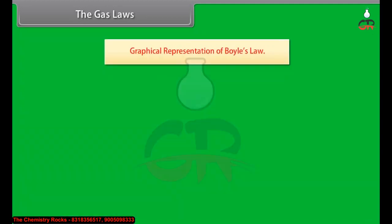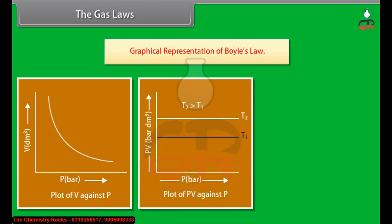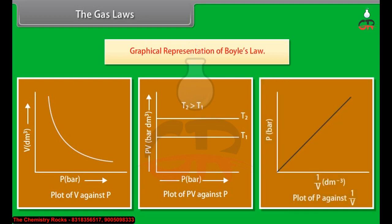Graphical representation of Boyle's Law: A plot of V versus P at a particular temperature shows that as P increases, V decreases. A plot of PV versus P at a particular temperature indicates that PV values remain constant in spite of a regular increase in P. The curve obtained by plotting PV against P at a particular temperature is called an isotherm. The higher curve corresponds to a higher temperature. A plot of P against 1/V shows a straight line, indicating that 1/V regularly increases with the increase in P.